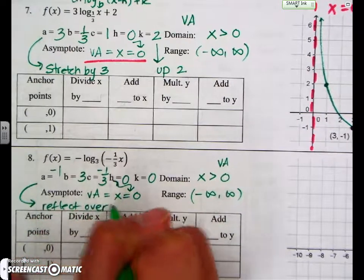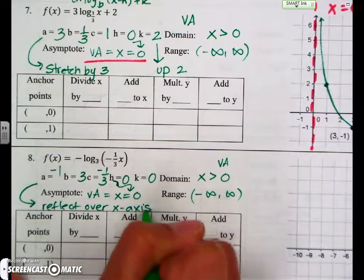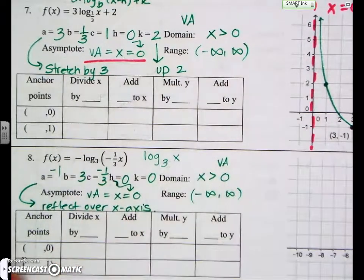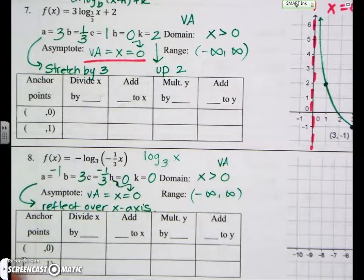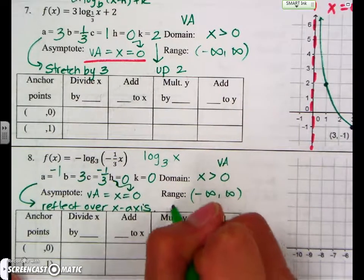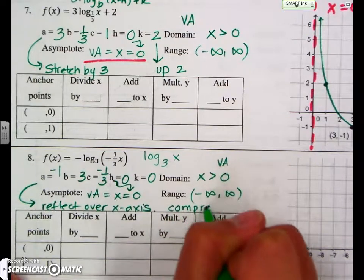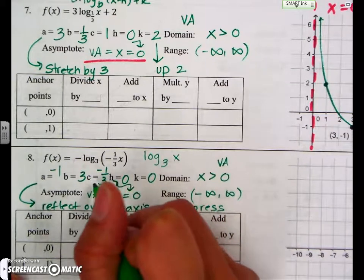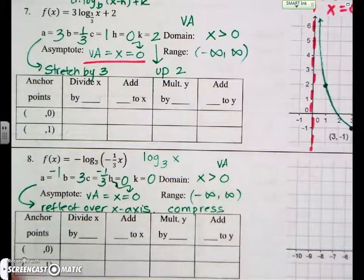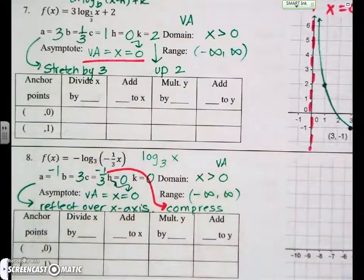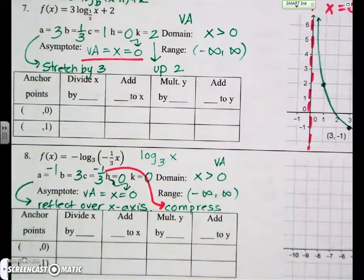Reflects over x-axis. Your base just tells you what your parent function is, which in this case is log base 3 of x. Your c is going to tell you if you divide your x values by c. So it's actually going to be a compression. I kind of ran out of arrows. I'm going to do it in red so that you guys can see it. So c gives you your compression.